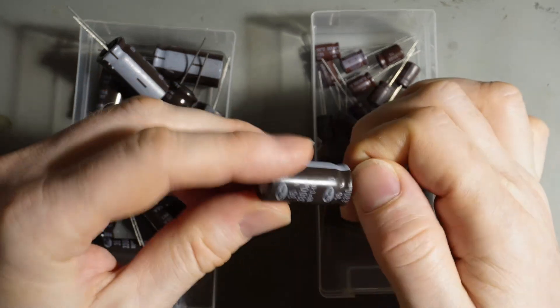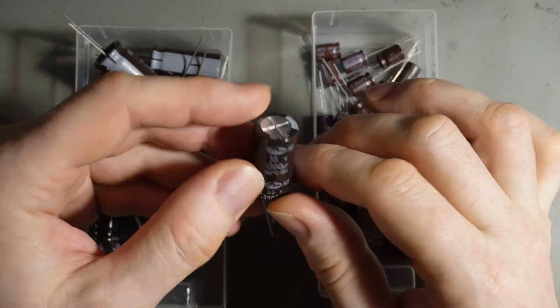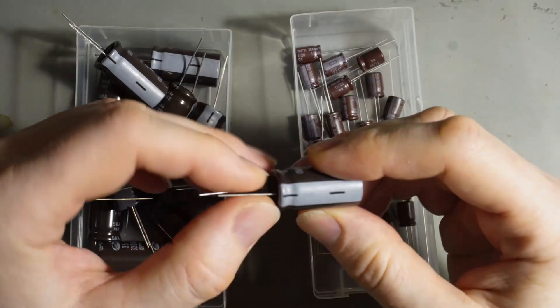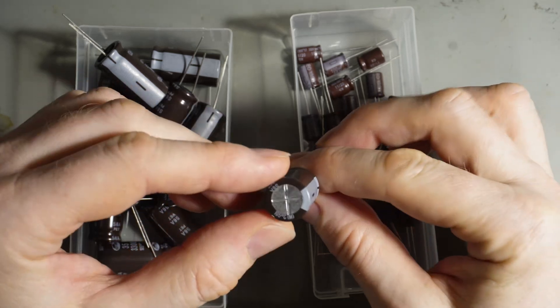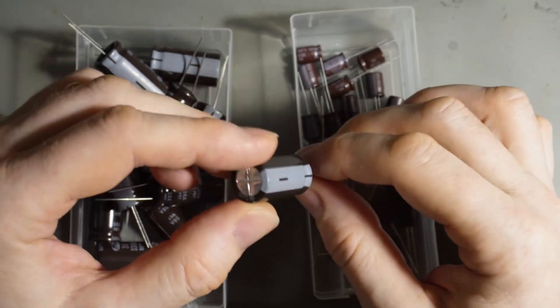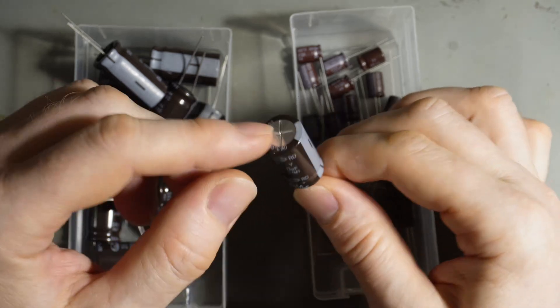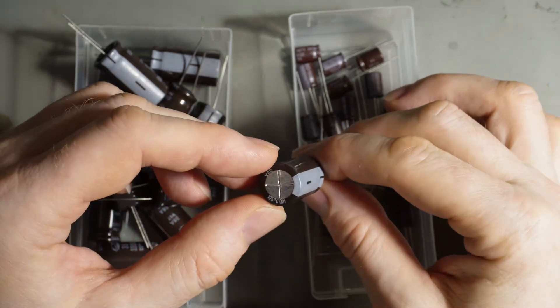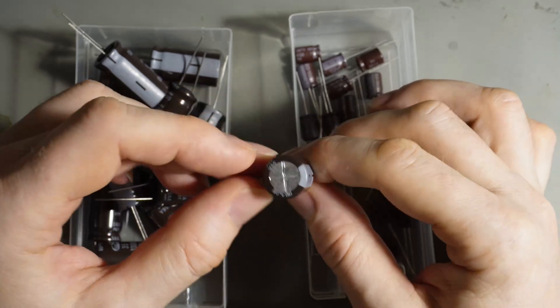This is a 3300 microfarad, also 35 volts. They come in different sizes, different shapes. They can get really big. What is important here, compared to the ceramic capacitors, they usually have much bigger capacitance and also they are polarized. The ceramic capacitors are non-polarized. So it doesn't matter which way around you put them in. But here in the electrolytic capacitors this is different.